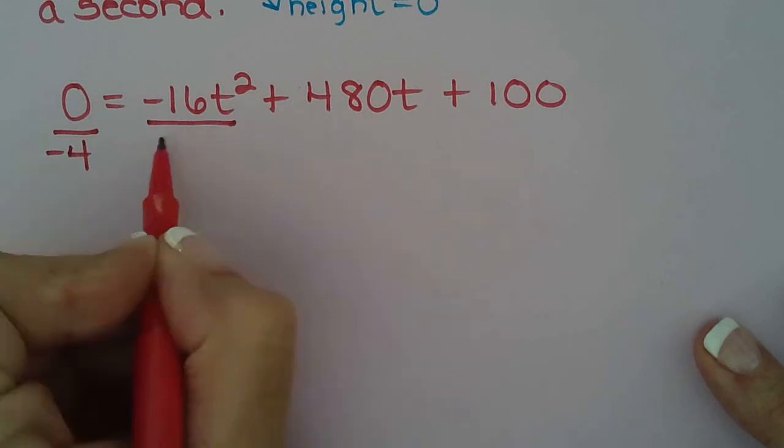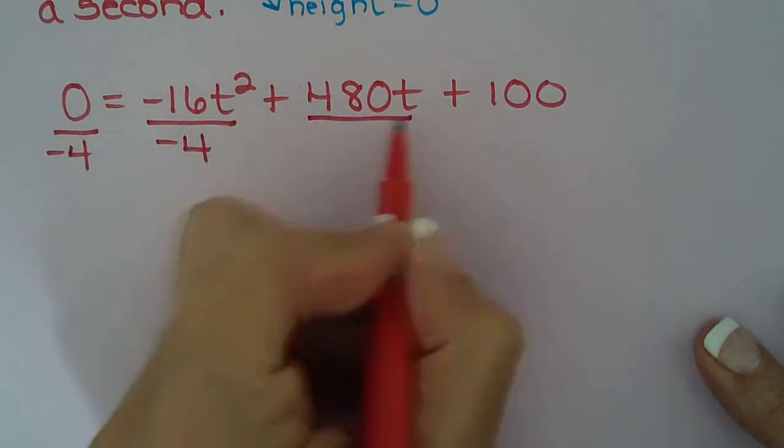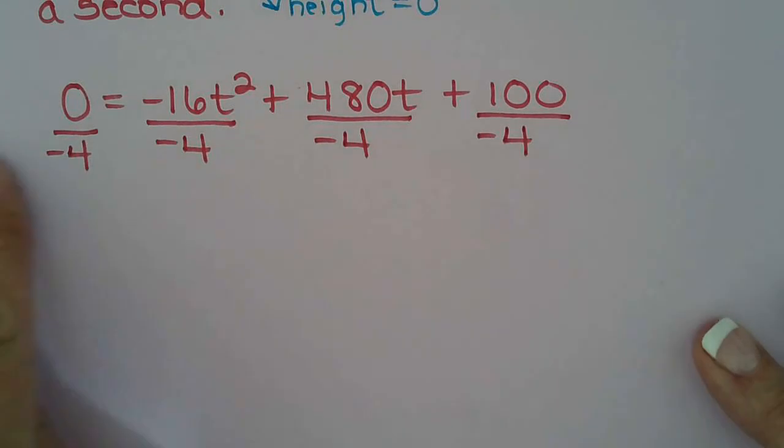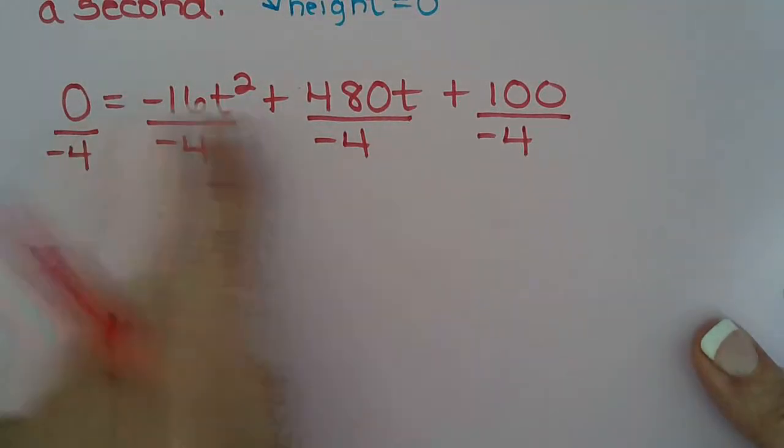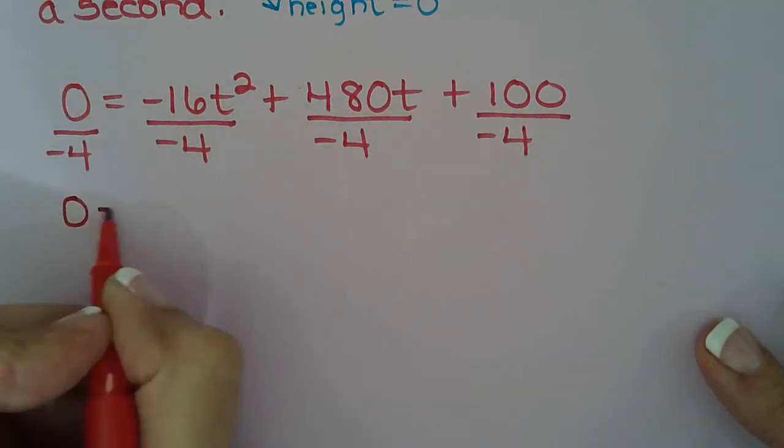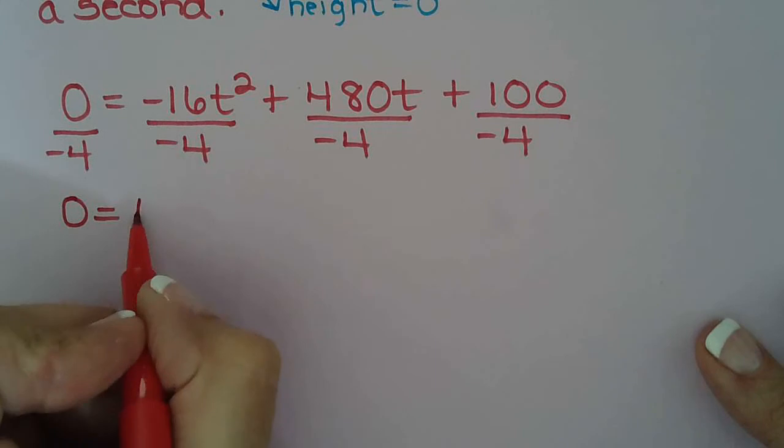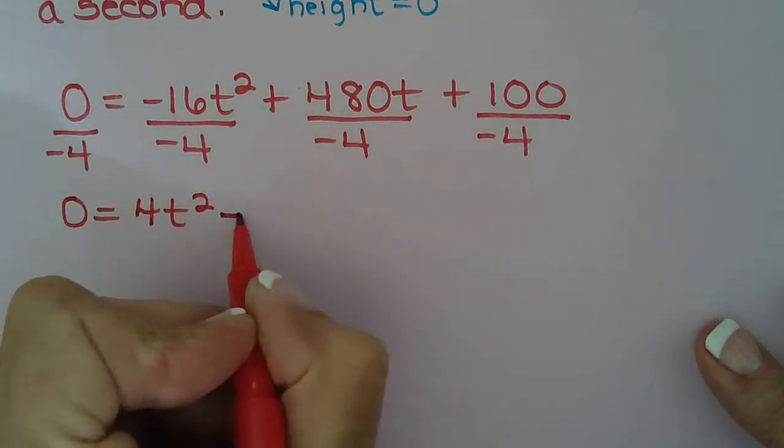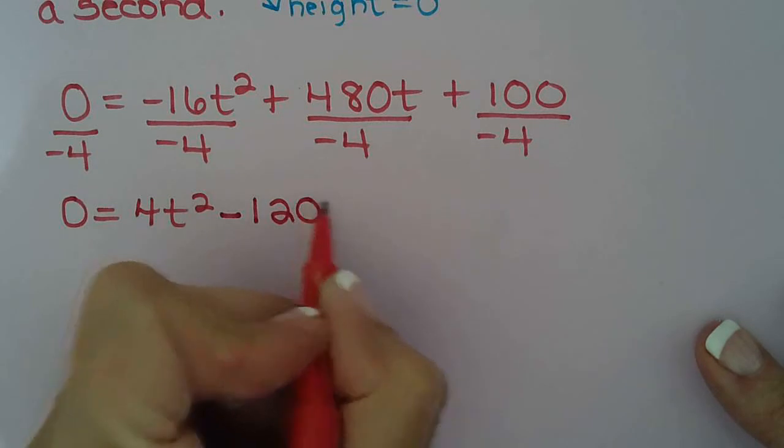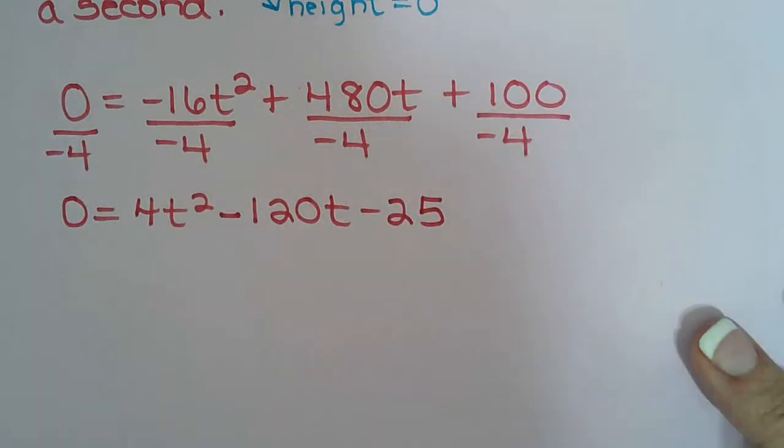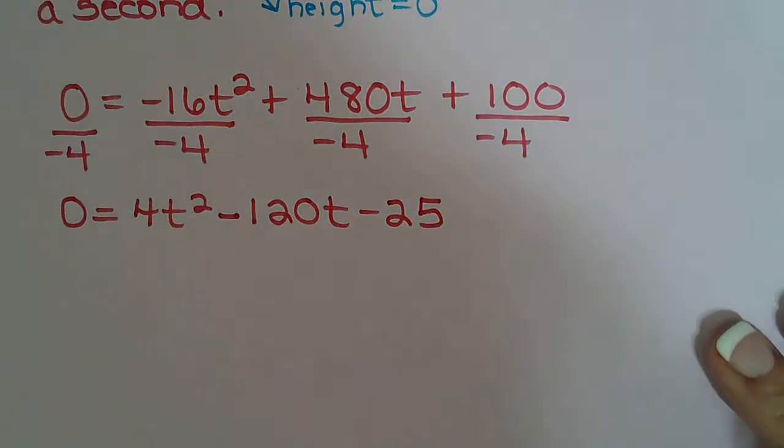We also learned in Chapter 4 when our leading coefficient is negative, we take out a negative GCF. So we are going to divide everything by negative 4. And as long as you divide both sides of the equation by negative 4 all the way along, it just goes away. So 0 divided by anything is 0, double negative is positive 4t squared, 1 negative is negative 120t, and 1 negative is negative 25.